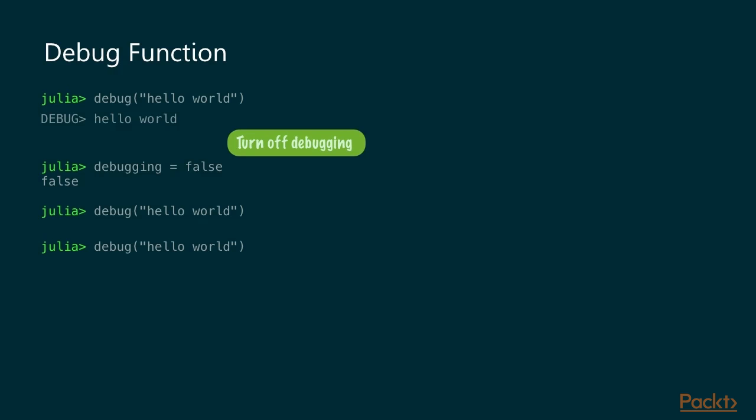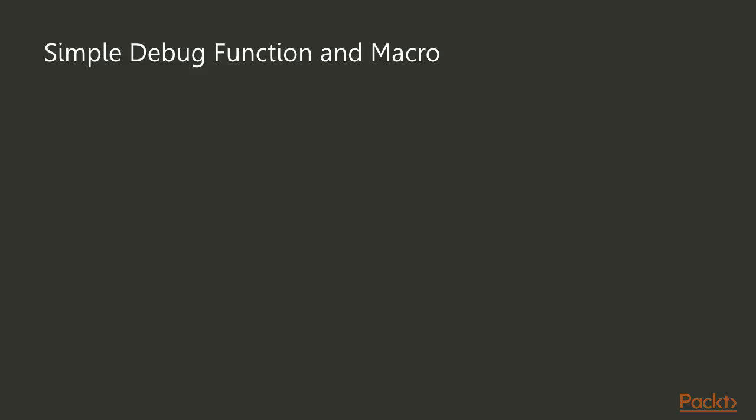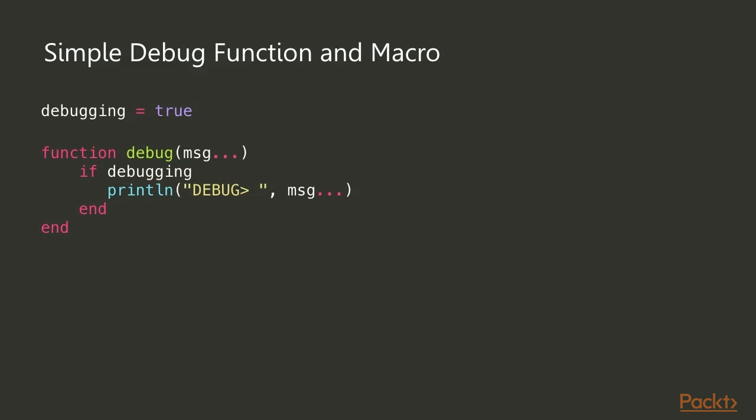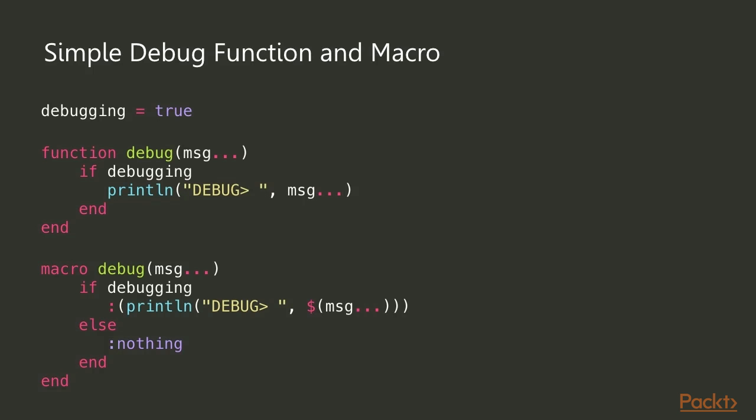To turn off debugging we just set `debugging` to `false`, and then whenever we call the debug function with a message it won't show up. Implementing this is simple — just a variable set to `true` or `false` that's checked inside the debug function. But what's really cool in Julia is that you can have a debug macro. Why use a macro instead of a function? Because with a function call, Julia has to do the `if debugging` check every time, which can affect performance in a tight loop.